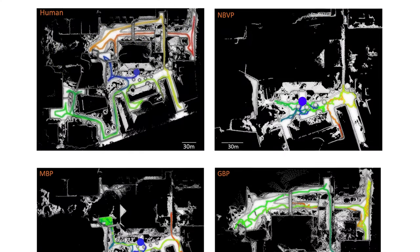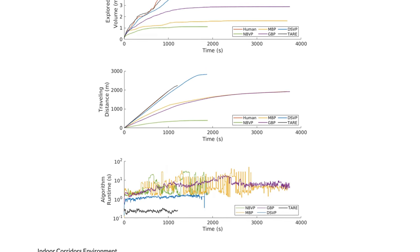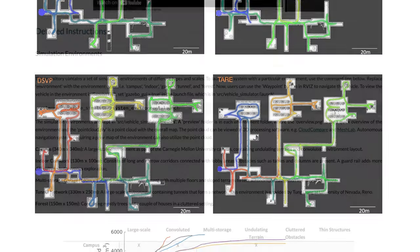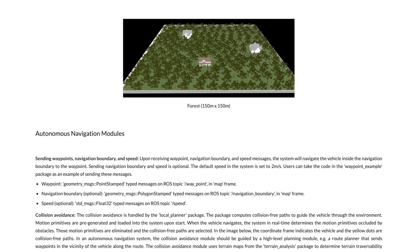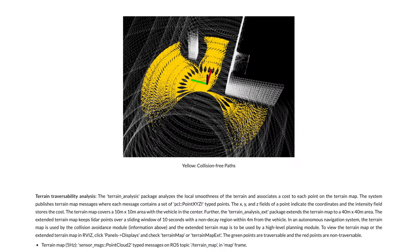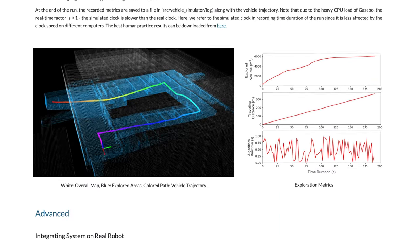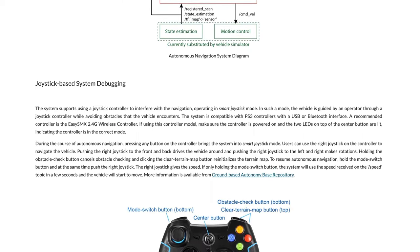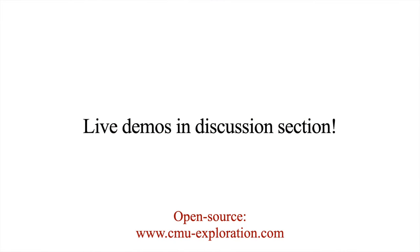Our software code is publicly available. In addition to open sourcing the exploration planner, we have released what we call the Autonomous Exploration Development Environment. There are multiple representative simulation environments, basic navigation modules such as collision avoidance, terrain traversability analysis, path following, and a set of visualization tools. This environment is meant to be a platform for benchmarking and also for real robot system integration. Finally, please come to our discussion section to check out our live demos.